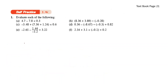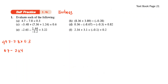Let's do self-practice 1.4C. Evaluate each of the following. For part A: 4.7 minus 7.8 times 0.3. Using the BODMAS rule, we do multiplication first: 7.8 times 0.3 gives 2.34. So we have 4.7 minus 2.34, which gives us 2.36.